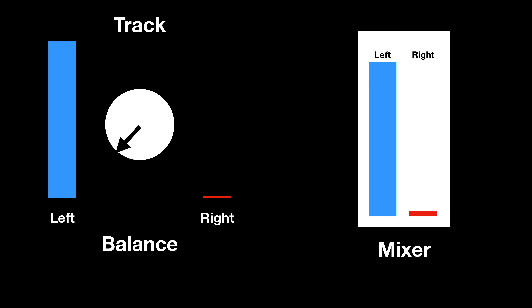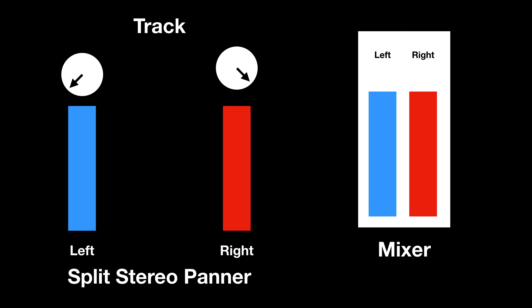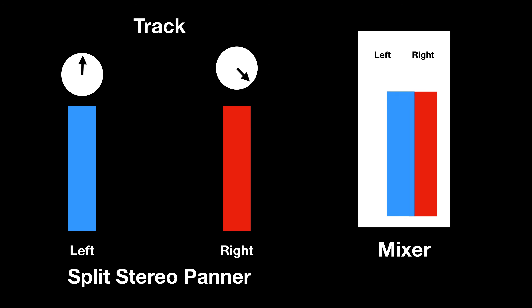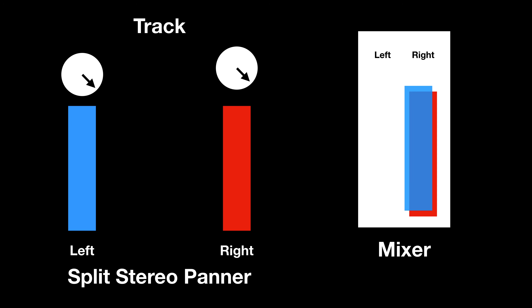If I go into the Split Stereo Panner, I have separate panners for both the left and the right side. If I take the left panner and move it all the way to the right, watch what happens in the mixer — it takes all the information from the left side and puts it on top of the information on the right side. So now I have everything shifted to the right, but all the information that's originally in the left channel and the right channel are both on that right side.